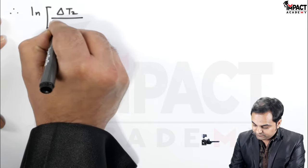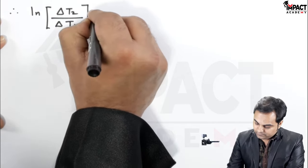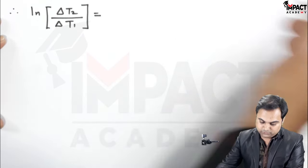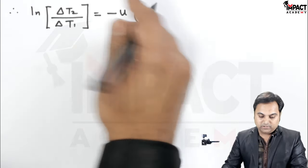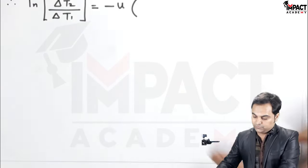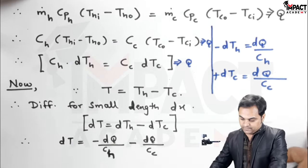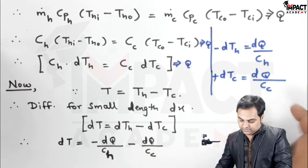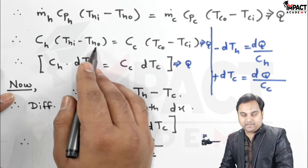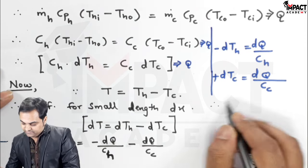Putting the limits: ln(delta T2 upon delta T1) equals minus U·A into (1 upon CH plus 1 upon CC). Now CH equals Q upon (THI minus THO), obtained from the heat balance equation CH into (THI minus THO) equals Q.